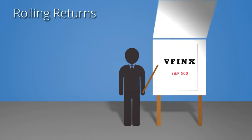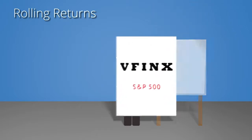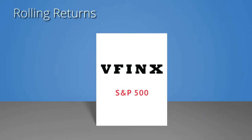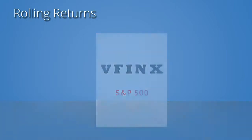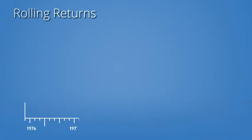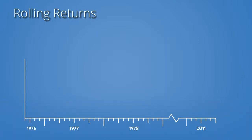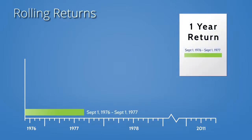Again, we'll look at the performance of Vanguard's S&P 500 fund up through May 31, 2011. This fund had its first full month of performance starting September 1, 1976. We calculated the return you would have earned over the next 12 months if you had been invested in the fund on September 1.